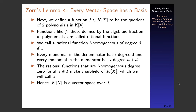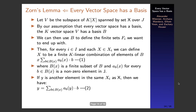The rational functions that are i-homogeneous of degree zero for all i in I form a subfield of K(X), which we call J. By field extension, K(X) is a vector space over J. To finish the proof, we let V be the subspace of K(X) spanned by the set X over J. By our assumption that every vector space has a basis, this subspace has a basis, which we define as B.